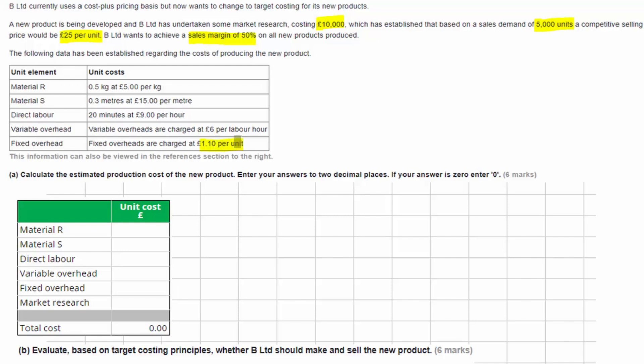The question asks us to calculate the estimated production cost of the new product. We need to enter our answers to two decimal places, and if the answer is zero, we need to enter a zero. Remember that the computer software is going to mark your answer based on your input, so if you don't input it in the right format, the computer will just think you're wrong. So pay attention to these instructions. First, we need our material R. It tells us that for each product we need to use half a kilogram and it costs £5 per kilogram. So if we take our £5 and multiply by a half, that gives us £2.50 for each unit, and remember that's to two decimal places, so 2.50.